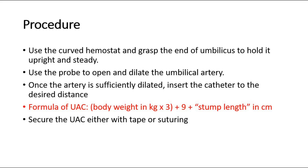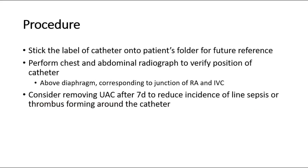The formula for umbilical arterial catheter insertion depth is: body weight in kilograms times 3, plus 9, plus stump length in cm. Then, secure the UAC either with tape or suturing. Stick the label of the catheter onto the patient's folder for future reference.